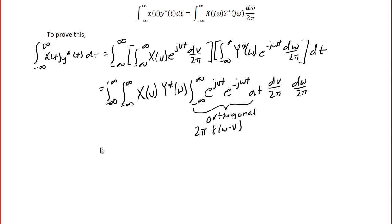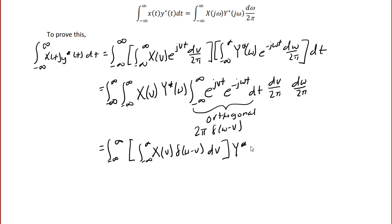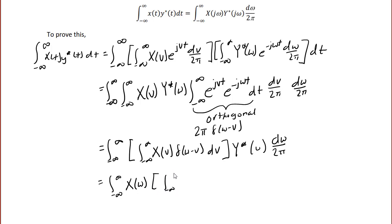Rearranging again, we have the integral from minus infinity to infinity of the quantity — the integral from minus infinity to infinity of X(v) δ(ω − v) dv — times Y-conjugate(ω), dω over 2π. Now pulling X(ω) out of the integral, we have the integral from minus infinity to infinity of X(ω) times the integral from minus infinity to infinity of δ(ω − v) dv, times Y-conjugate(ω), dω over 2π.